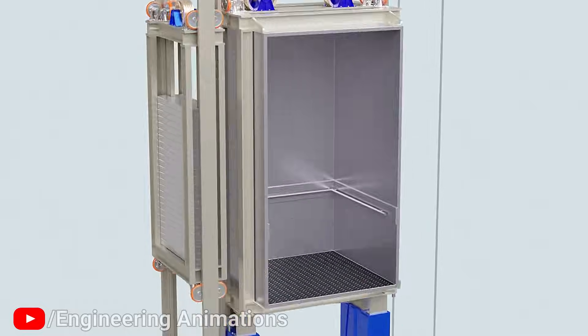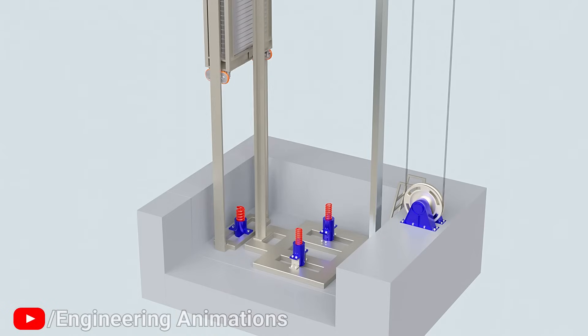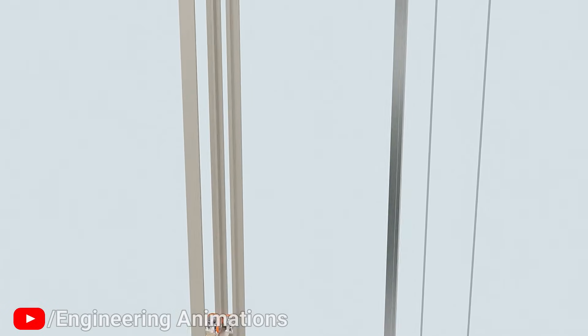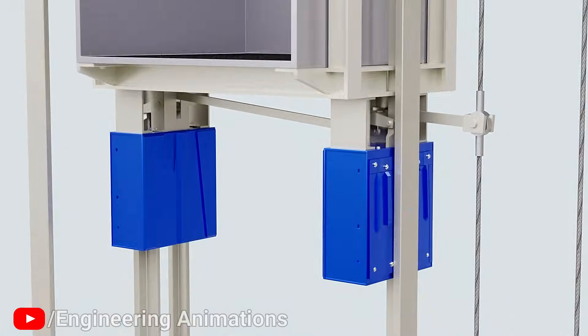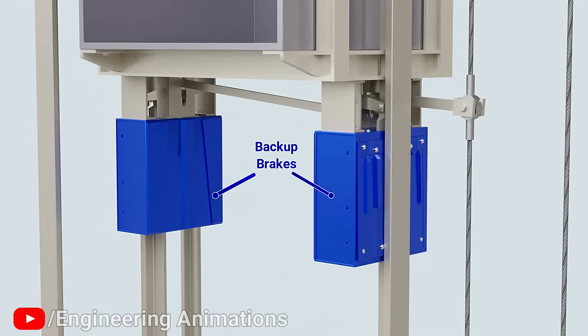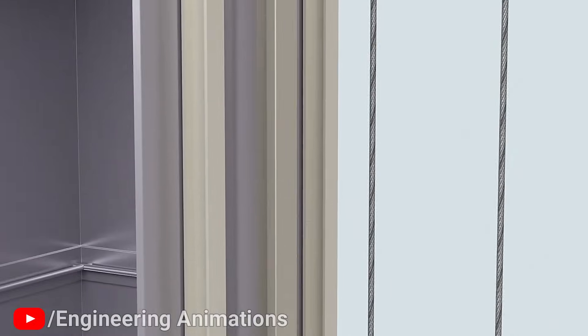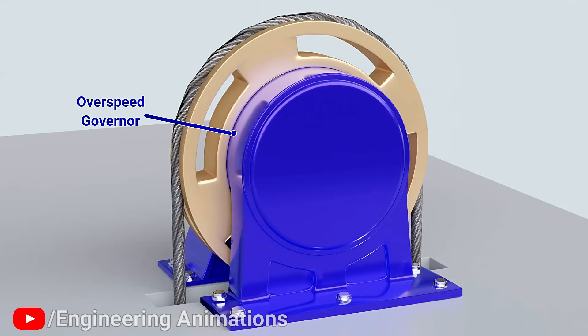But what if the worst happens and all these steel cables suddenly snap at once? If this happens, the counterweight will freefall and hit the cushioning buffers at the bottom. But the car will still not plunge to the basement. This is because a set of backup brakes are provided at the bottom of the car. These brakes are controlled by a component called overspeed governor.